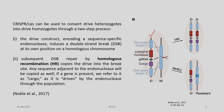With CRISPR-Cas9, we can convert drive heterozygotes into drive homozygotes through a two-step process. We have the drive construct here, which encodes a specific endonuclease specific to a particular sequence. This induces a double-strand break at its own position on the homologous chromosome. It may undergo two pathways of repair: either by homologous recombination, where copies of the drive are copied into the break site. Any sequence adjacent to the endonuclease will also be copied. If a gene is present, we refer to it as a cargo, as it is driven by the endonuclease through the population.